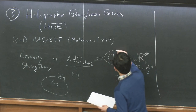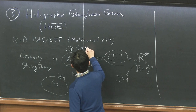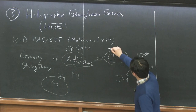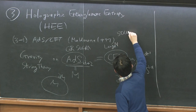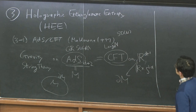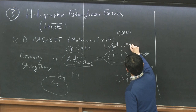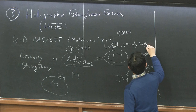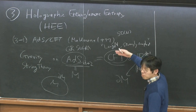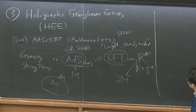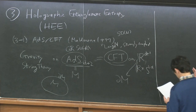To get a classical gravity limit — namely supergravity — we have to take a particular limit of the conformal field theory: large N, which is the degree of freedom for the SU(N) gauge group, and strongly coupled. In my talk I'm basically assuming this condition, but we can also talk about 1/N corrections and coupling constant corrections perturbatively.